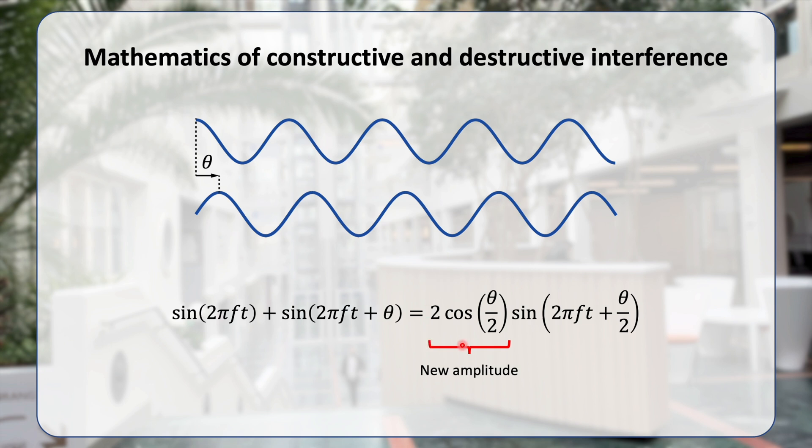And this θ here is now determining to what extent these two sinusoids are adding up constructively or not. If θ is 0, it just gets 2, so it gets twice the amplitude. And if θ is something else, well, we get a smaller amplitude value here. If you want to know the power of this signal, well, it will be proportional to the square of this term here.